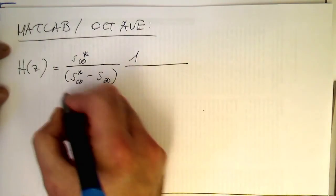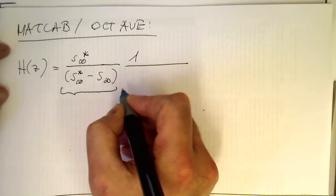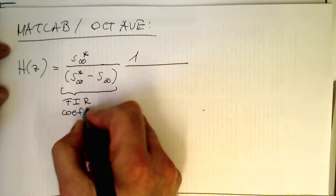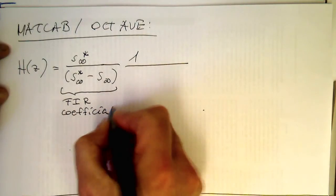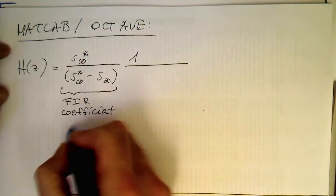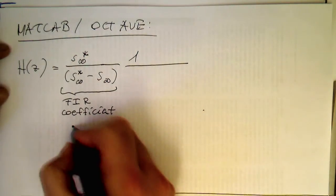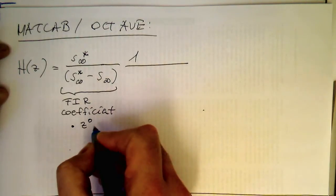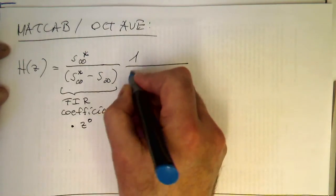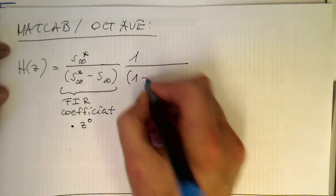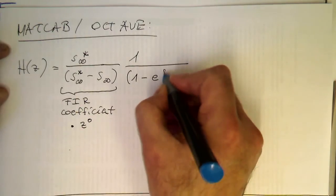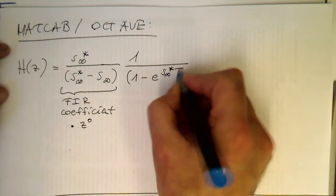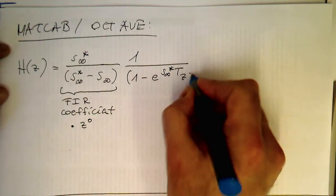So again, this one we can now interpret as an FIR coefficient. Essentially, this is here, this coefficient multiplied by Z to zero, so without any delay. So this becomes an FIR coefficient, and then E to S infinity complex conjugate T, Z to minus one.